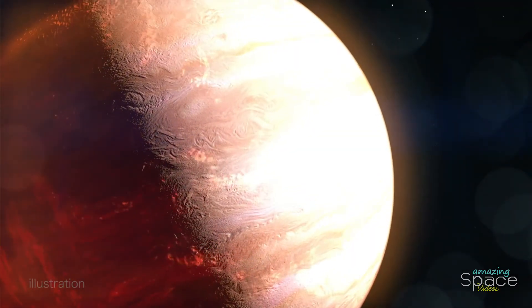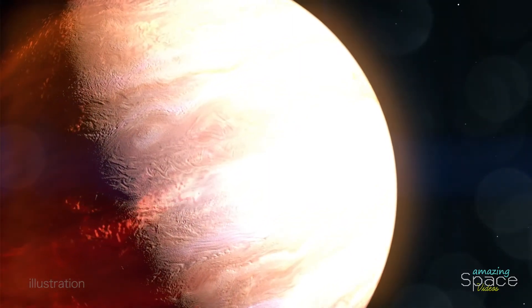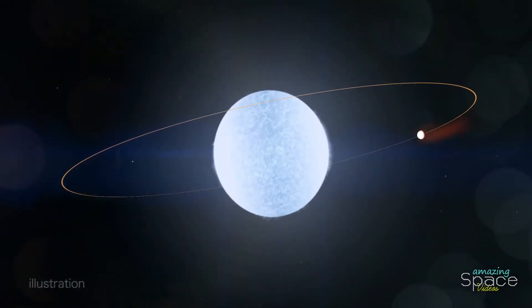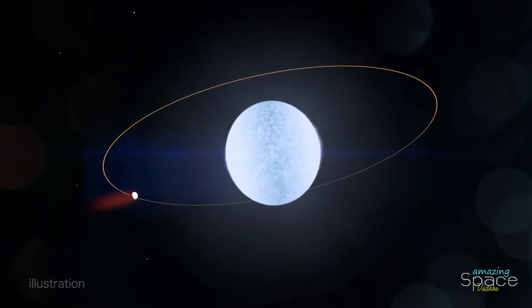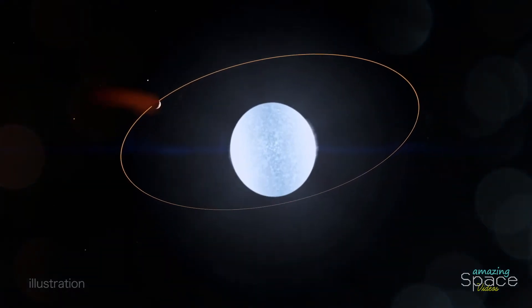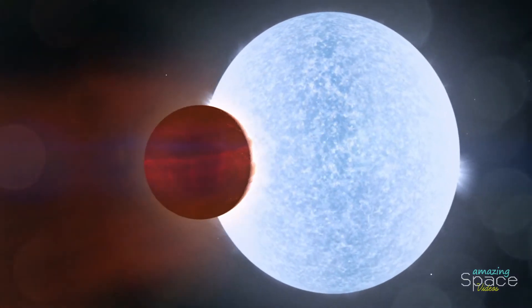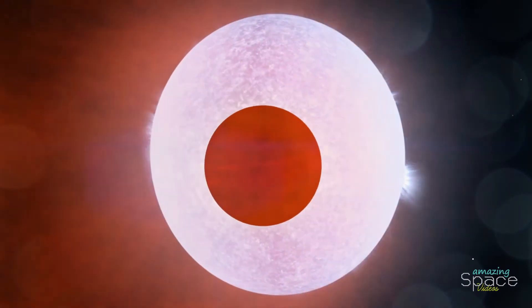This is KELT-9b. It's about twice the size of Jupiter and it's always super hot, taking only 36 hours to orbit its star. It receives 44,000 times more energy than the Sun delivers to Earth, making it one of the hottest planets known, with a dayside temperature hotter than the surfaces of some stars. This causes its atmosphere to boil away into space.